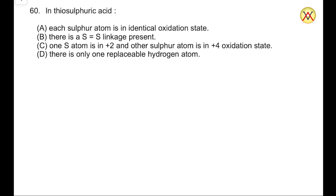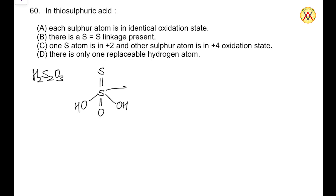The formula of thiosulfuric acid is H₂S₂O₃. If we draw the structure of H₂S₂O₃, we have S double bond S double bond O, and two OH groups attached to the central atom. The hybridization of the central atom is sp3, and the hybridization of the substituent sulfur is sp2 because there are two lone pairs.